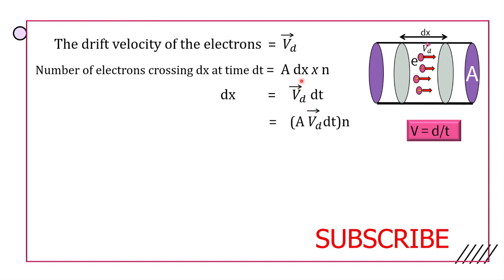Now substitute dx: A times Vd into dt times n. That will be the number of electrons crossing dx at time dt.